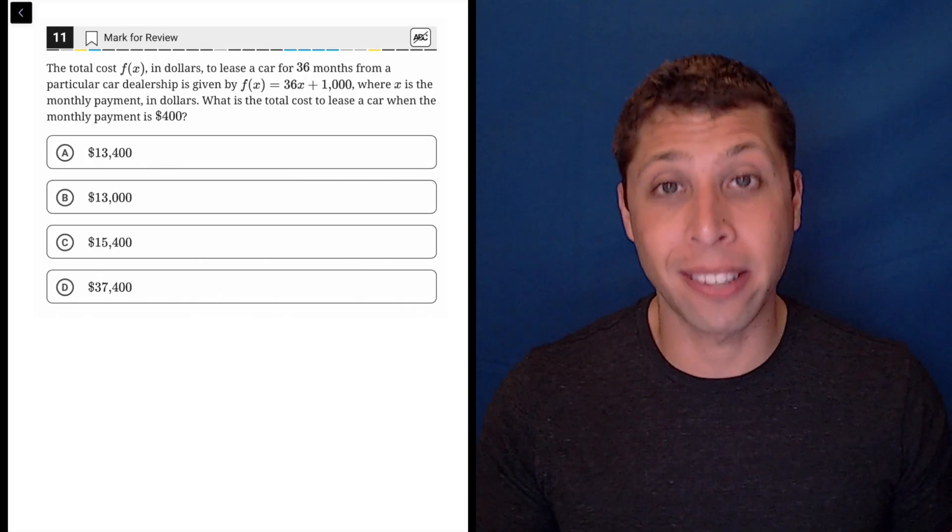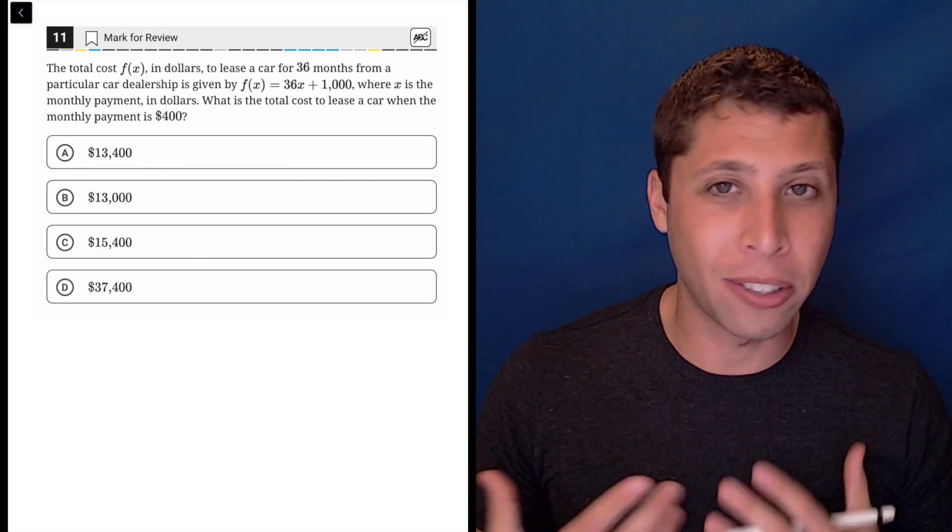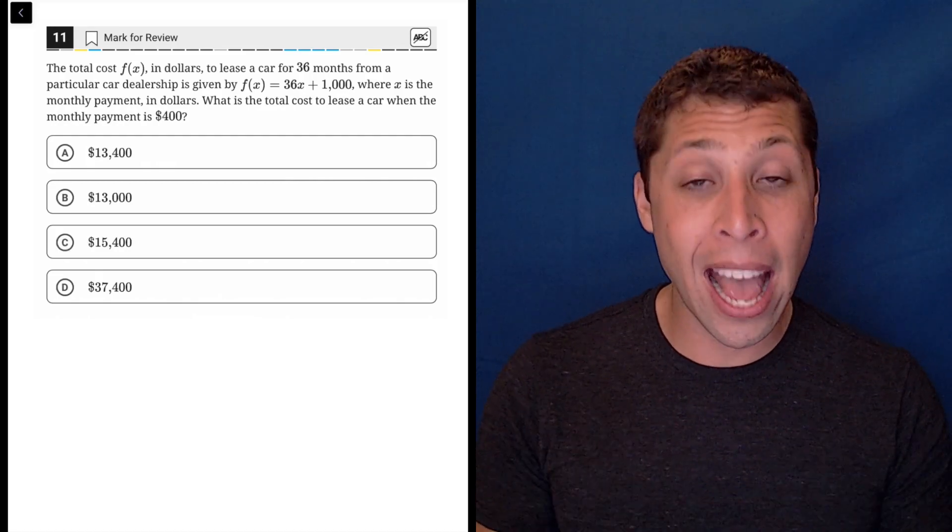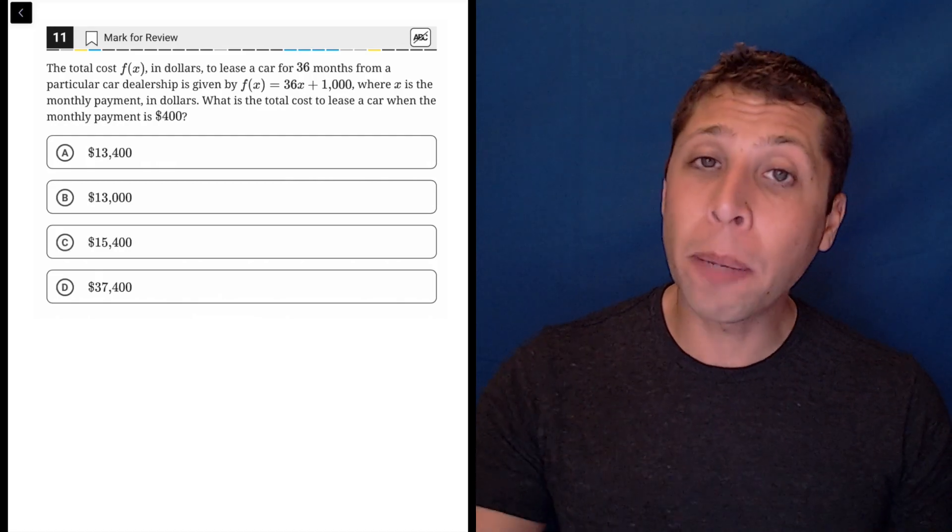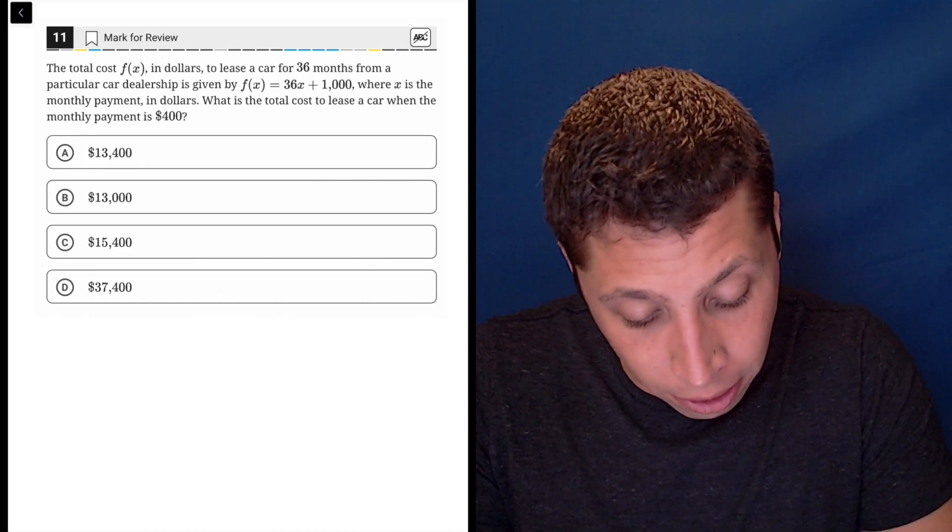function notation, F of X, except this time we have a story, but it doesn't really matter. We're still going to follow the same rules, which is that we have an X or a Y, and we just need to plug this into the right place into the equation.